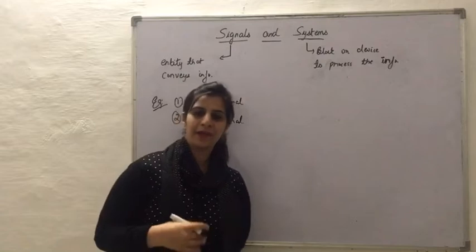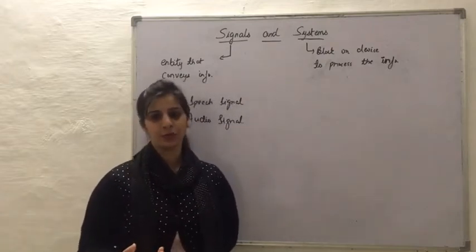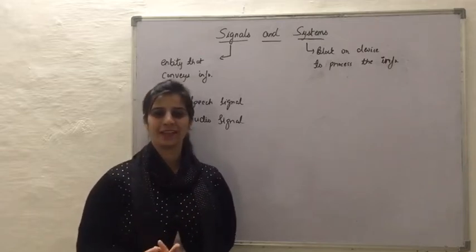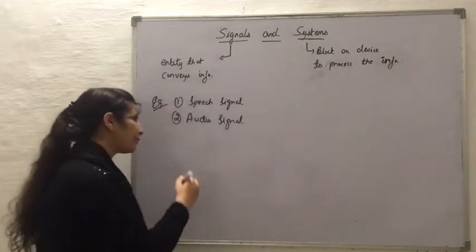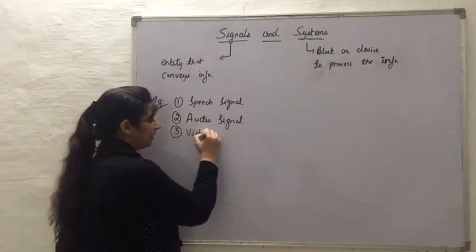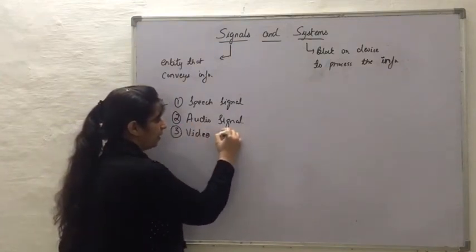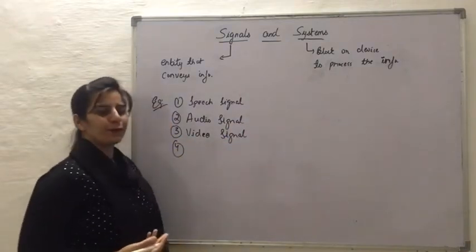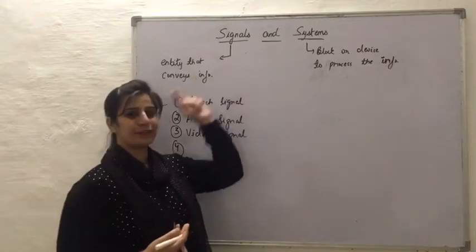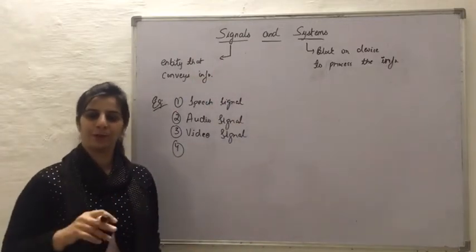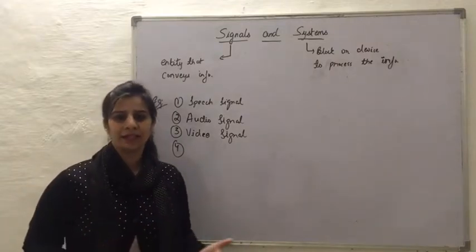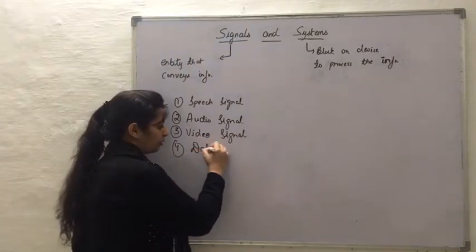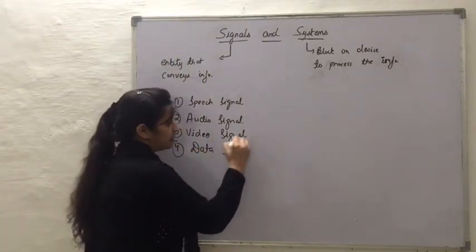Whatever I am communicating from this place to you is through a video. This video will again form a signal because it is conveying some information. So the third kind of signal we have is a video signal. The last example could be something written on top of this video, or the name with which you opened this video. That name is a data form, so we have another kind of signal that can also be called a data signal.